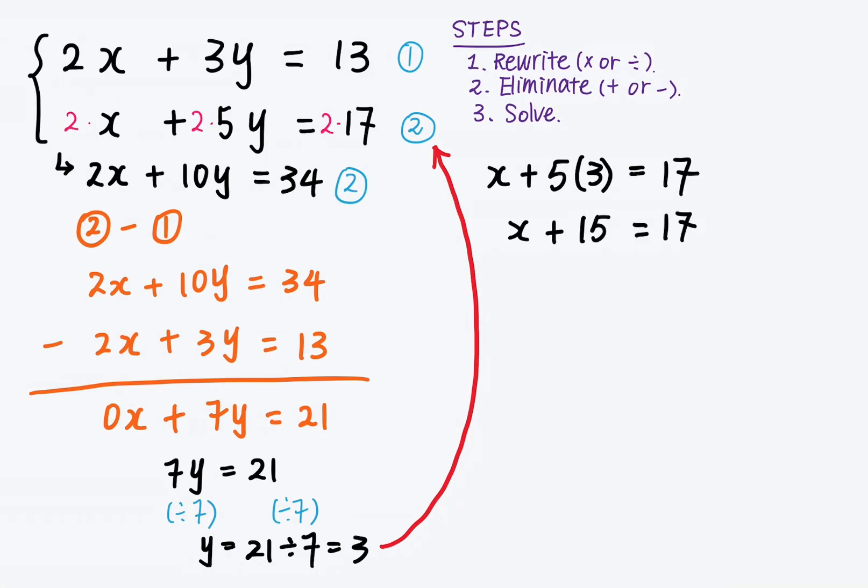And I can find x by taking away 15 on both sides. And finally, x is equal to 17 minus 15, which is 2. So the answer is x is equal to 2 and y is equal to 3. We'll see you next time.